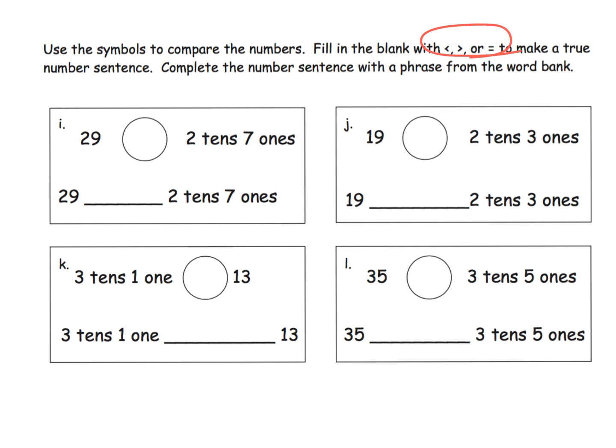When we look at 29 versus two tens and seven ones, we need students to either see two tens and seven ones as 27, or we need students to see that 29 can be thought of as two tens and nine ones. We want students to be able to look at the way the numbers are represented and then make your decision.